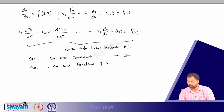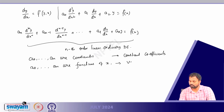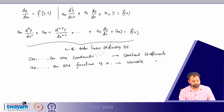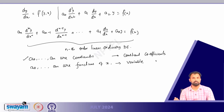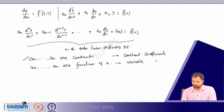So we have two categories: constant coefficients and variable coefficients. We will start with constant coefficients and then do the variable coefficient case. Now that we know these types of ODEs, let me start with a theorem.